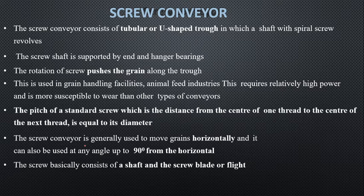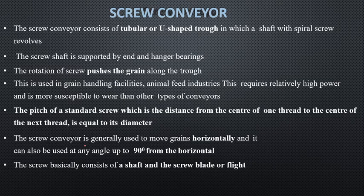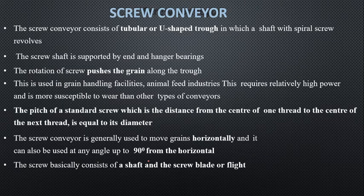The main parts of the screw conveyor are: screw blade, screw shaft, coupling, trough cover, inlet and outlet gates, bearings, and drive mechanism. The screw conveyor is generally used to move grains horizontally, typically installed at up to 90 degrees from horizontal for proper working. Capacity decreases correspondingly with increased inclination.